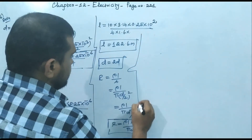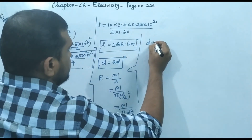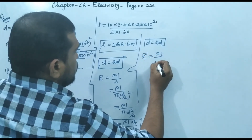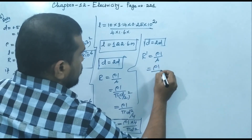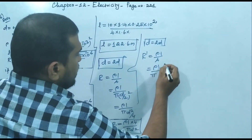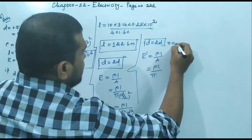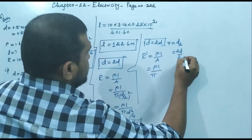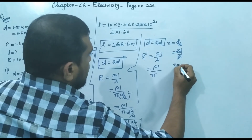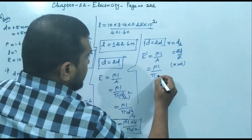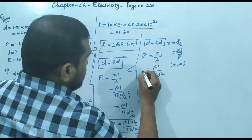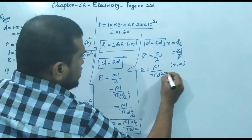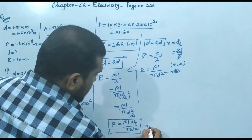When the diameter becomes 2d, the new radius R becomes 2d/2 = d. So the new resistance R' = ρL / πd². This is equation 2. Here the denominator uses d² instead of (d/2)², so the factor of 4 is no longer present.